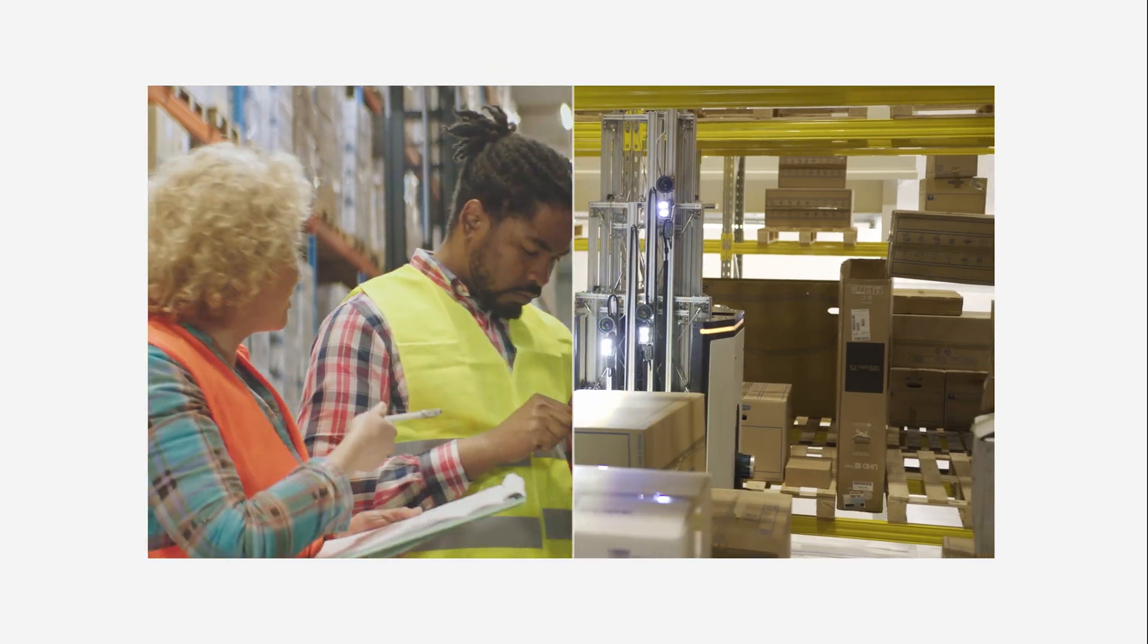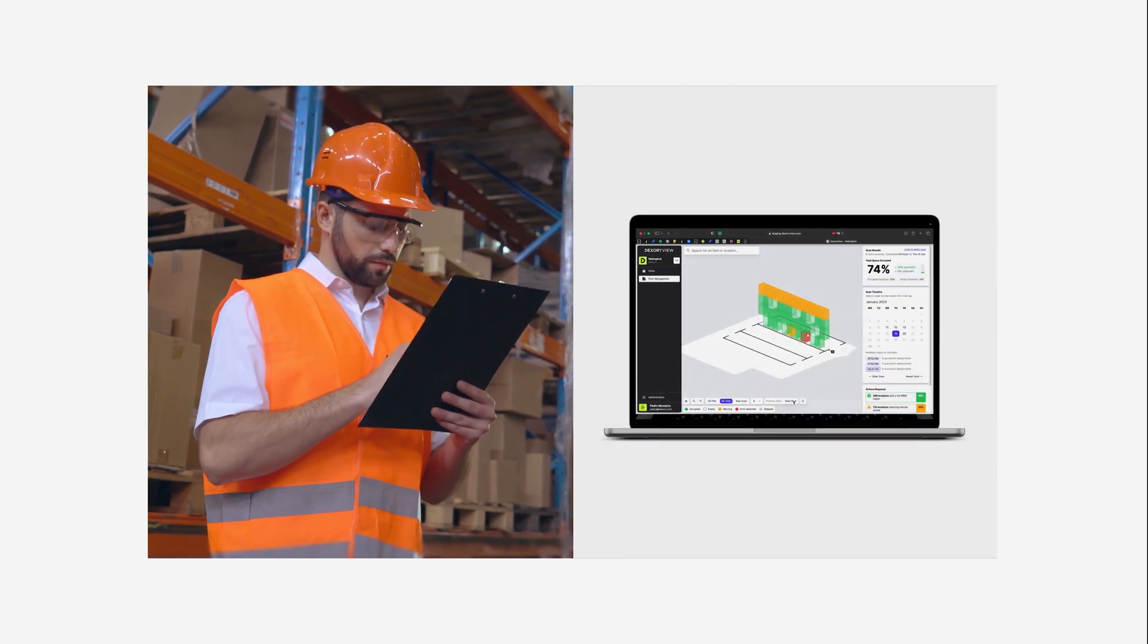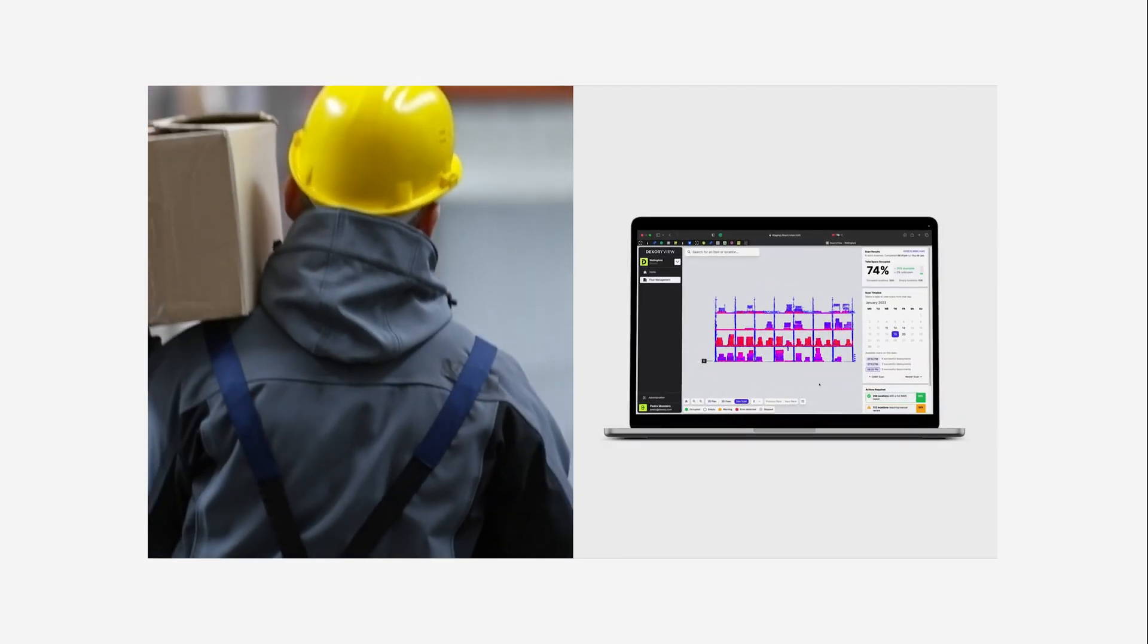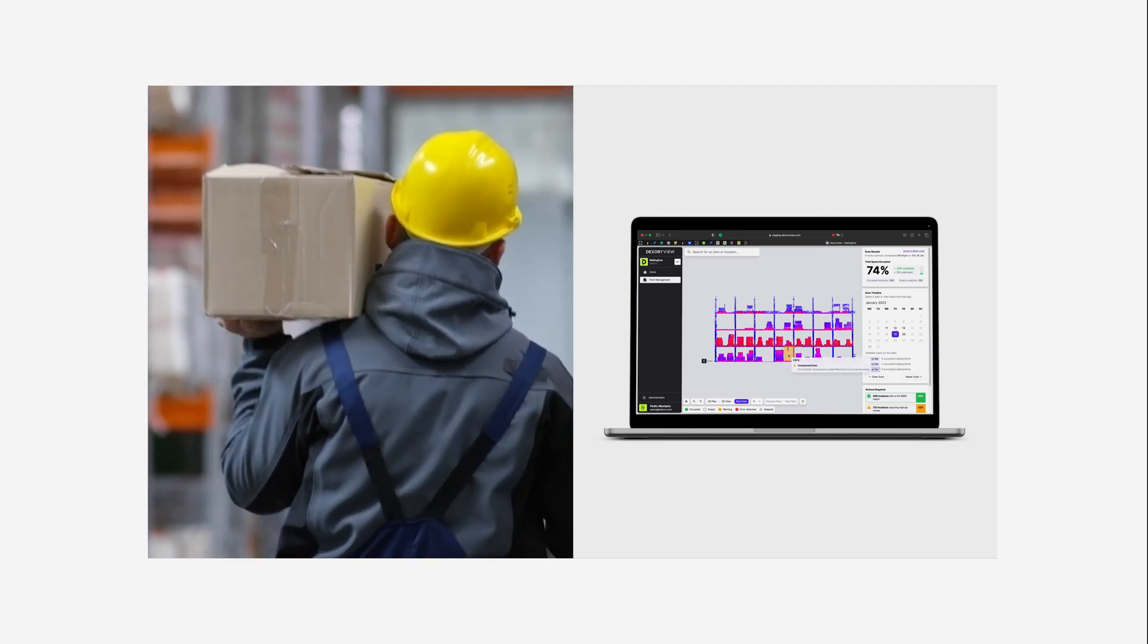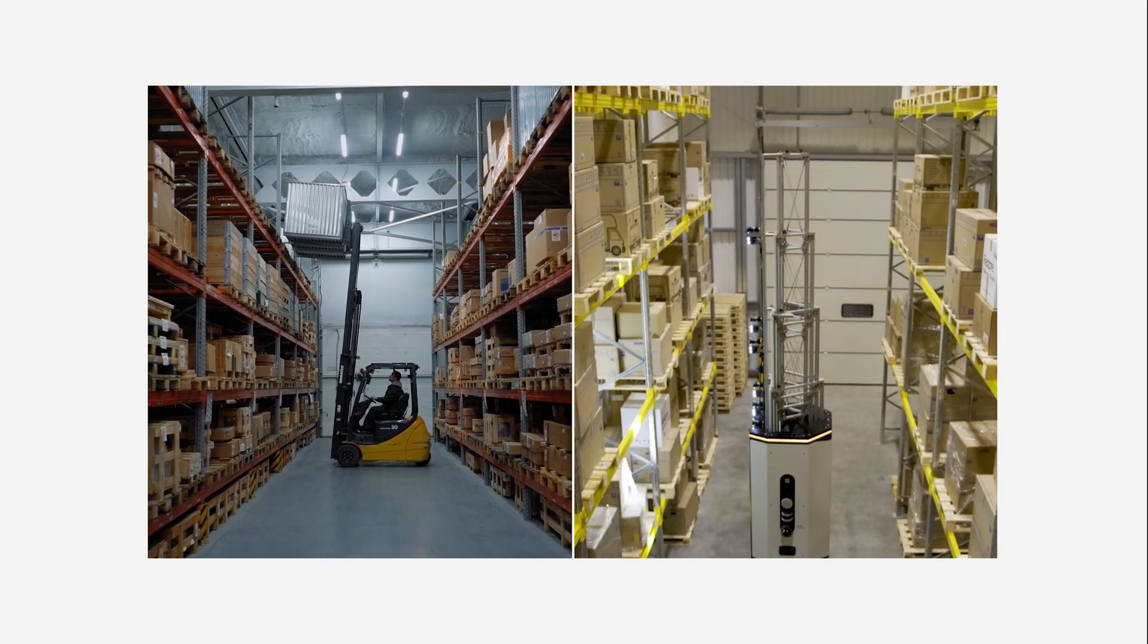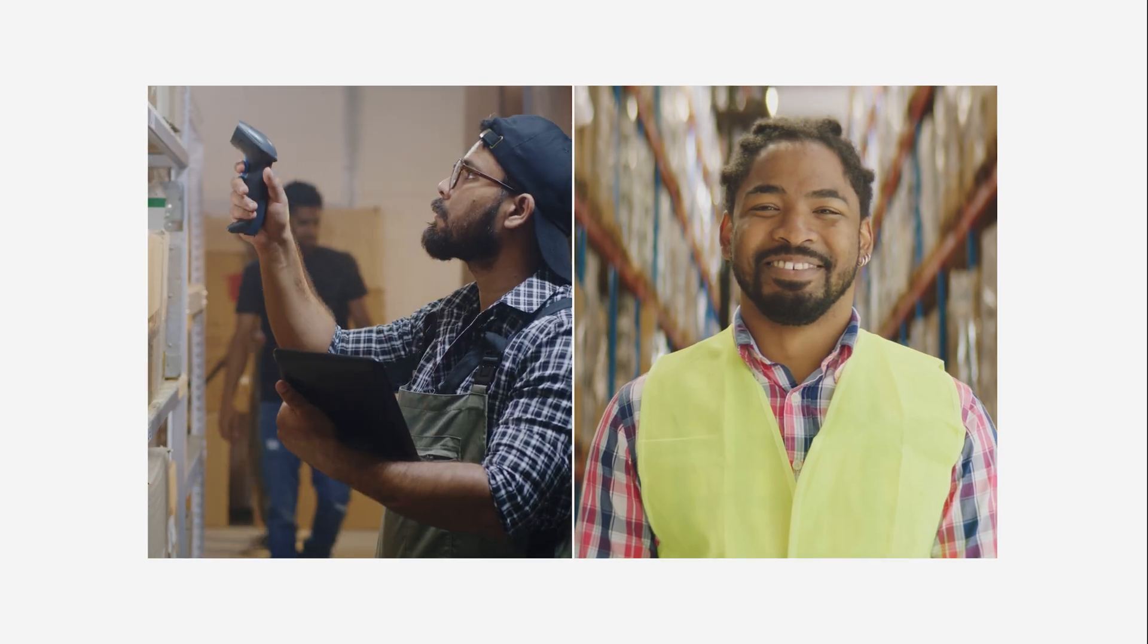Move from time consuming stock checks to continuously monitoring the inventory. This can reduce misplacement errors to zero, whilst ensuring that the right stock is available in the right location and at the right time. It saves hundreds of hours and ensures teams and operations are as productive as they can be, focusing on moving the goods around rather than counting or searching for them.